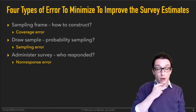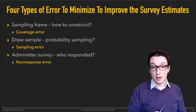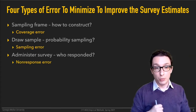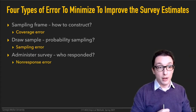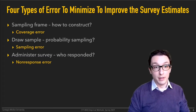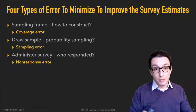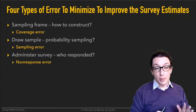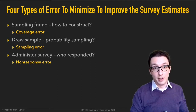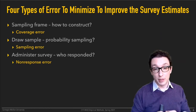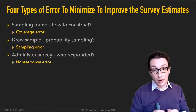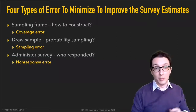Then there's non-response error. Obviously not everyone you invite to participate in a survey will do so. This can be a problem if the people who do not respond turn out to have very different attributes compared to the ones who did respond, because whatever inferences you make based on respondents won't hold for the entire population. It's not a problem if respondents are similar to non-respondents, but it could be a huge problem if they're not.